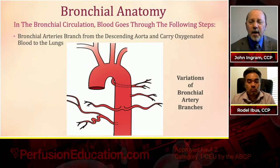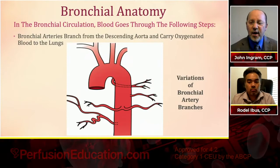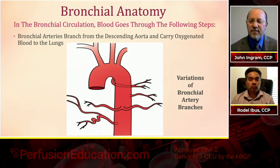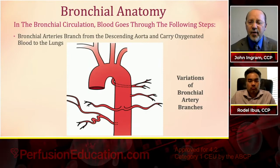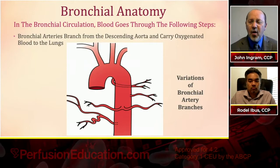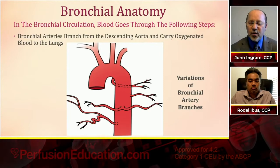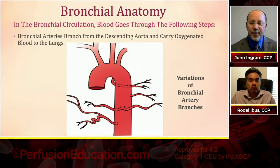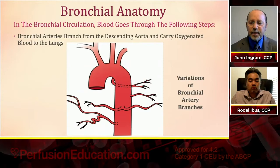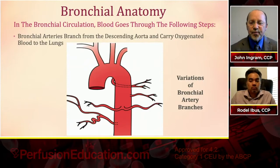In the bronchial circulation, the bronchial arteries branch from the descending aorta just below the left subclavian takeoff — at the very beginning of the descending aorta — as tiny branch arteries. There can be many variations: sometimes two on one side and one on the other, or two and two, or a bifurcating artery. Regardless, these arteries come off at this point of the aorta, perfusing the lung tissue of the bronchial circulation.